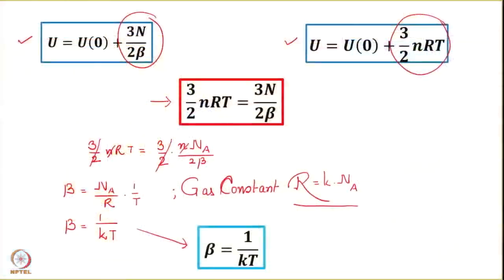This completes our discussion on the undetermined multipliers. Recall that we wanted to set a term in d log W equal to zero — the term that was not independent but we made independent — for certain values of alpha and beta, which were the undetermined multipliers. Exponential alpha was discussed earlier, and here we proved that beta equals 1 over kT. Sometimes people work in terms of beta and sometimes in terms of temperature, so do not get confused.